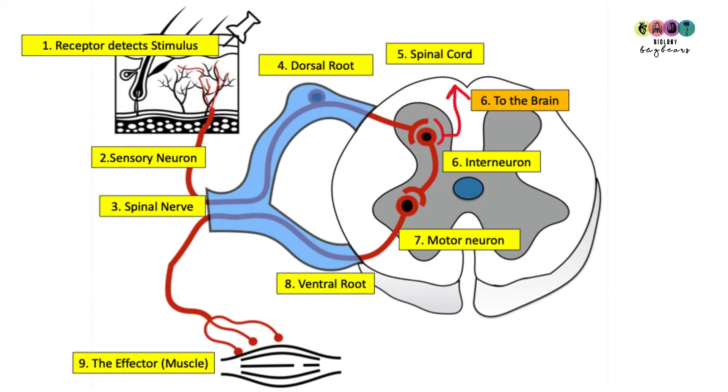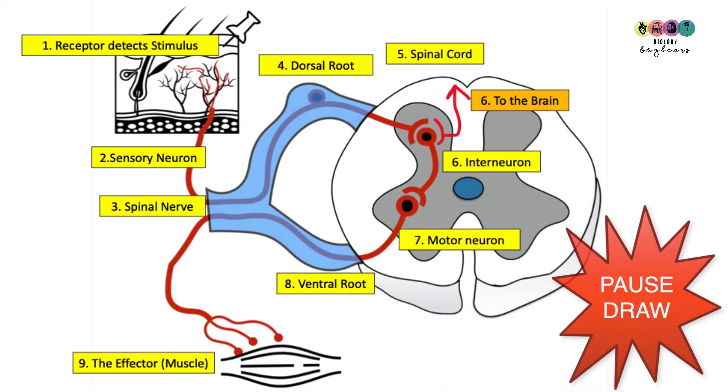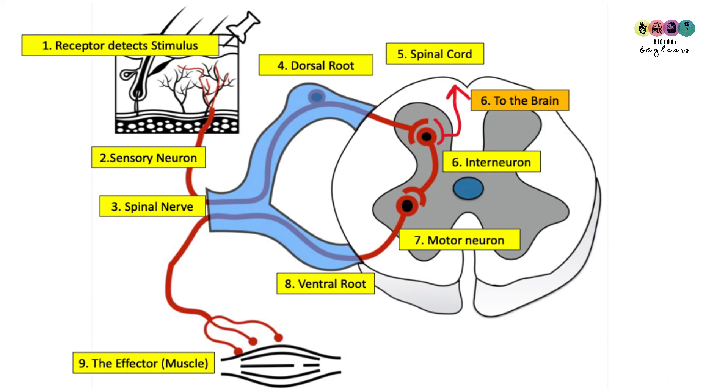A reflex arc is the pathway taken by nerve impulses involved in a reflex action. So let's go through the reflex arc. This is a good diagram to know. If I was you I would pause the video, draw it and put in the labels and then you'll be able to tell the story. You could be asked in your exams to draw it and label it and discuss what happens.